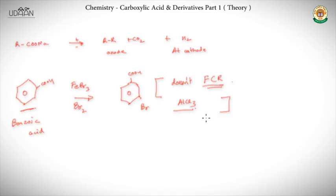The next is when we have a carboxylic acid and if we add Cl2 or Br2 with red phosphorus, we get a halogen attached to the alpha position of the carboxylic acid.